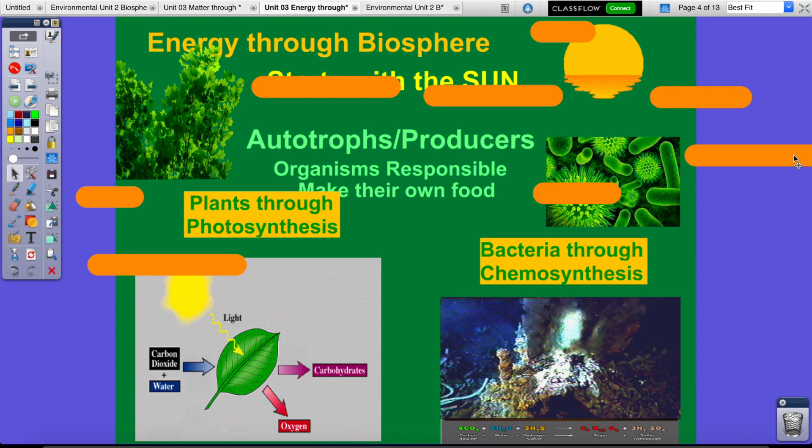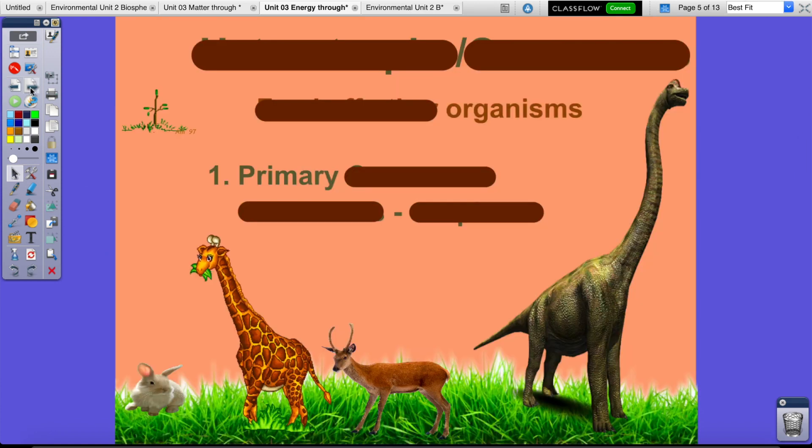And one more thing. There's a reactant in chemosynthesis and a product in photosynthesis that's not. Sulfur. Sulfur compounds. So you have to know that a reactant of chemosynthesis is hydrogen sulfide, and a product is sulfur compounds. You don't have to know what compound it is. Just sulfur compounds is enough. Any questions on that?